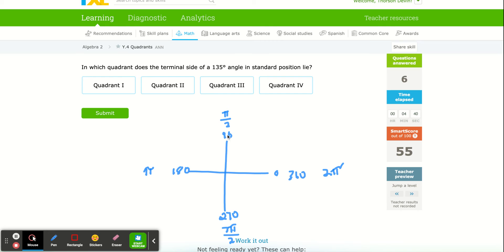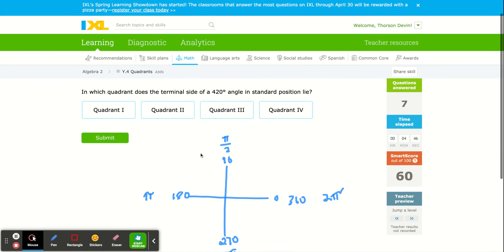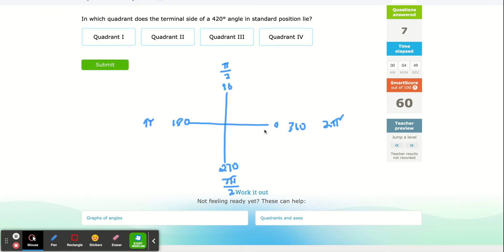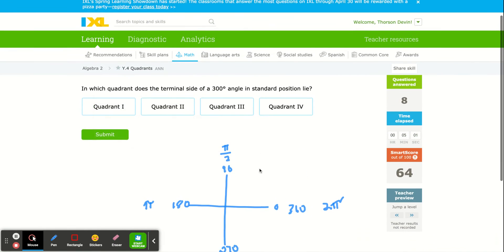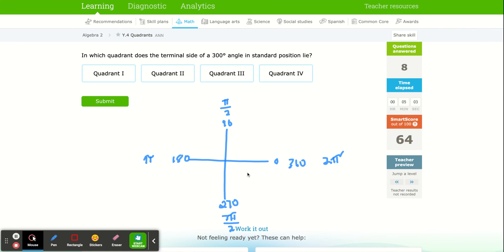135 degrees is bigger than 90, smaller than 180, so that's quadrant 2. For 420 degrees, I went around 360. What's 420 minus 360? That's 60 degrees. It's going to be in the first quadrant. So you might have to subtract and get a remainder. 300 degrees is between 270 and 360, that's quadrant 4.